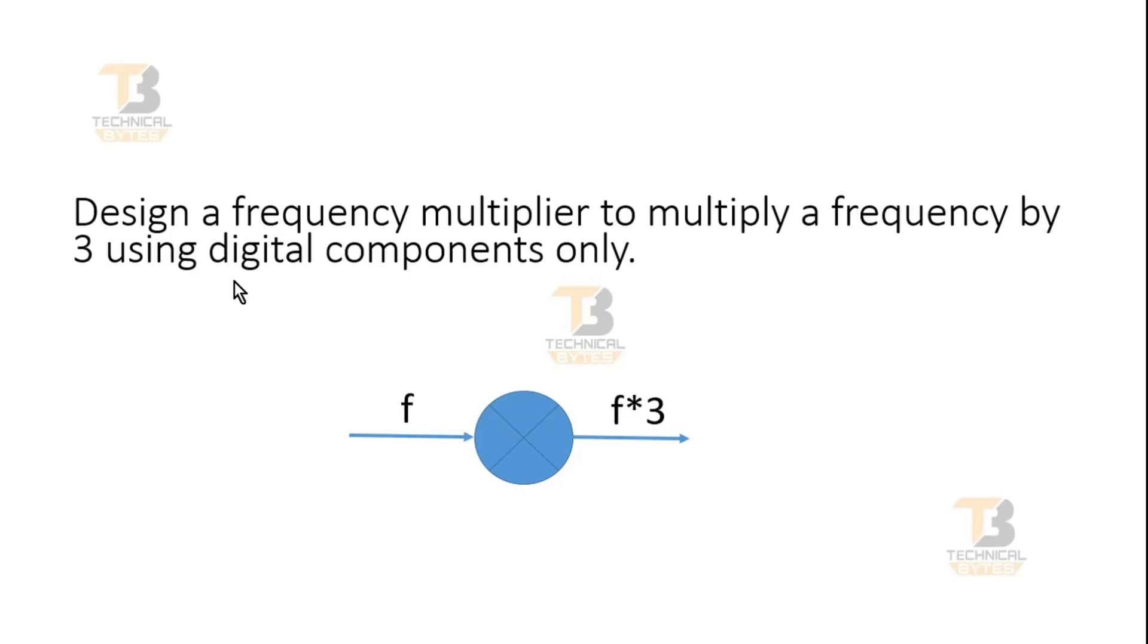In the previous video I asked you a similar question where you had to multiply input frequency by 4. It was comparatively easy. But in this question you have to multiply the input frequency by 3. This is the input frequency f and this is the frequency multiplier. Its output should be f times 3.